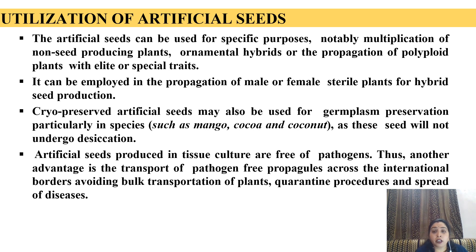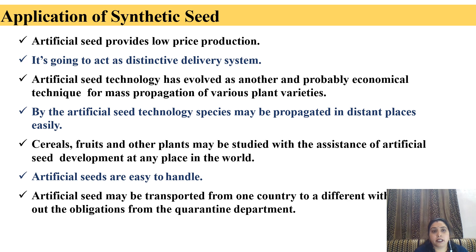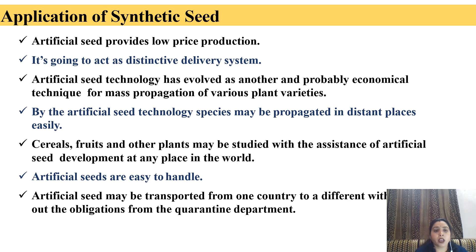Utilization of artificial seeds: The artificial seeds can be used for various purposes, mainly multiplication of non-seed producing plants, ornamental hybrids, or the propagation of polyploid plants with allied or special traits — that means desired characteristic features. It can be employed in the propagation of male or female sterile plants for hybrid seed production. Cryopreserved artificial seeds may also be used for germ plasm preservation, particularly in species like mango, cocoa, coconut, etc., as these seeds will not undergo desiccation. Artificial seeds produced in tissue culture are free of pathogens. Thus another advantage is the transport of pathogen-free propagules across international borders, avoiding bulk transportation of plants, quarantine procedures, and spread of disease.